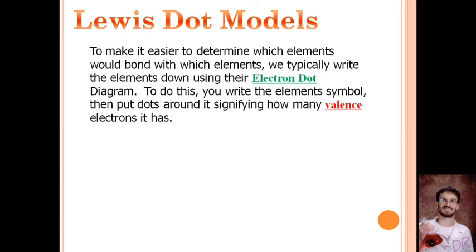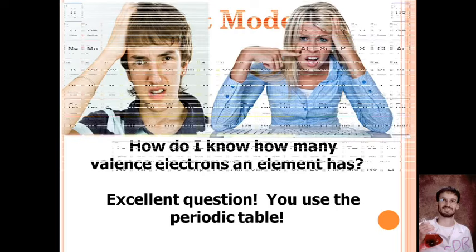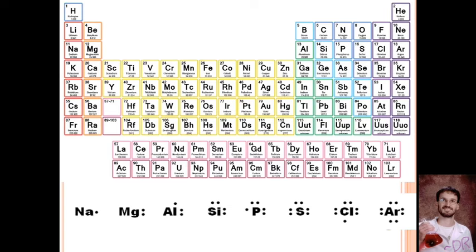Since these valence electrons are so important to understanding how elements interact with each other, there's a special way to write them. Whenever you write an element symbol, you include dots equal to the number of valence electrons it has. How do you know how many valence electrons an element has? This is what we've been learning about with the periodic table — you can find anything you want to know about an element in the periodic table.